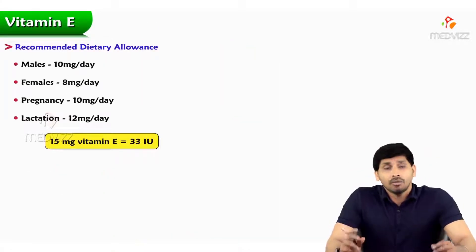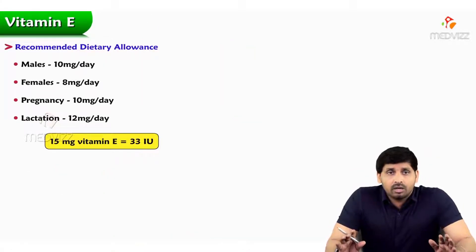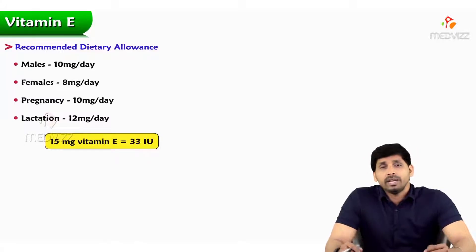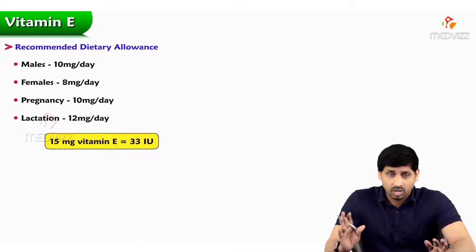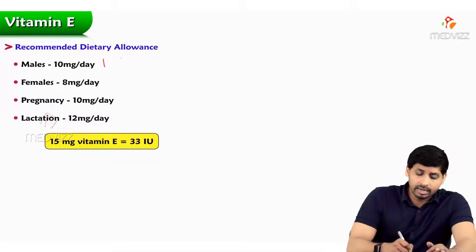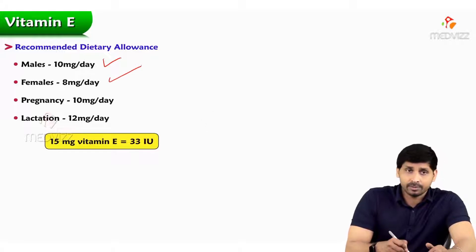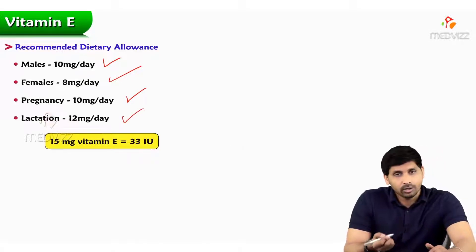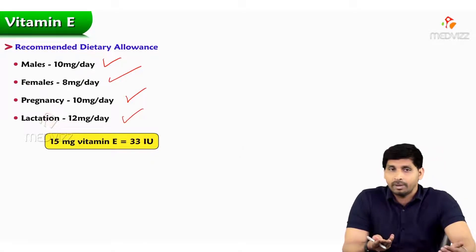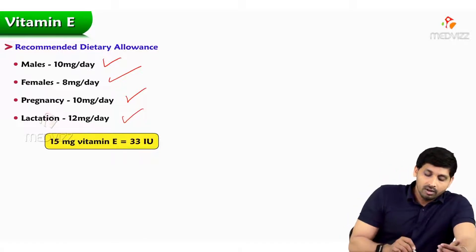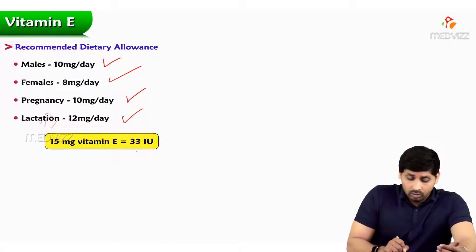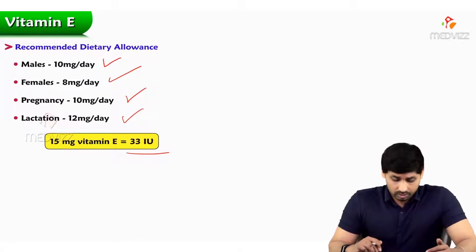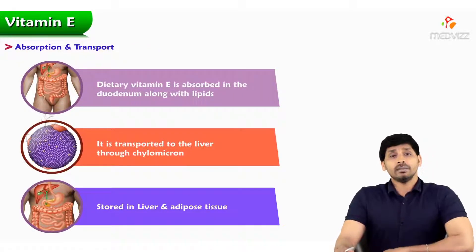Regarding the RDA: because Vitamin E is fat-soluble, excessive intake leads to hypervitaminosis. Males are supposed to take 10 mg per day and females 8 mg per day. Pregnancy increases the requirement to 10 mg per day, and during lactation it is 12 mg per day, as the mother feeds the baby. 15 mg of Vitamin E is equivalent to 33 international units.